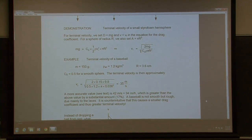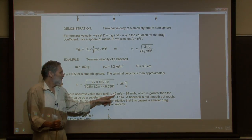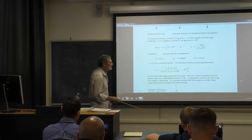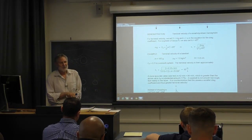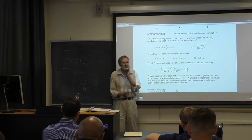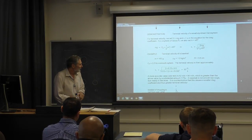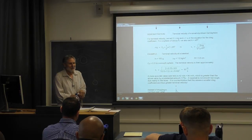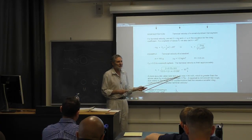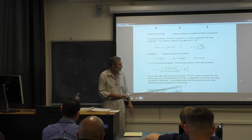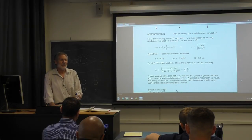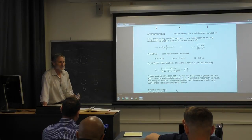But our textbook gives 42 meters per second — a 17% difference. What's going on? We used the value for a smooth sphere, but a baseball is not smooth. It's mainly due to the laces. So what effect do the laces have on the terminal velocity? The answer is that the laces give a significantly greater terminal velocity — almost 20% greater.